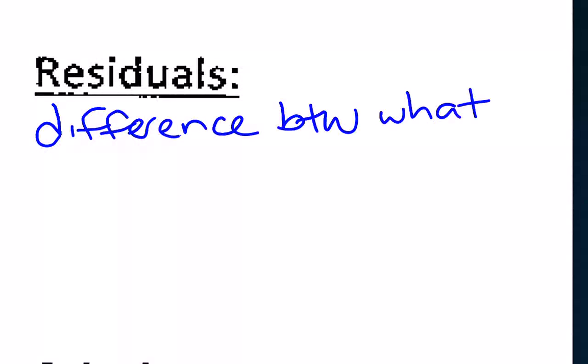Now that we know how to find linear regression on the calculator, we're going to talk about a couple other things that I can do to interpret my line. The first one has to do with something called a residual. A residual basically tells me the difference between what my equation predicts and what actually happens.